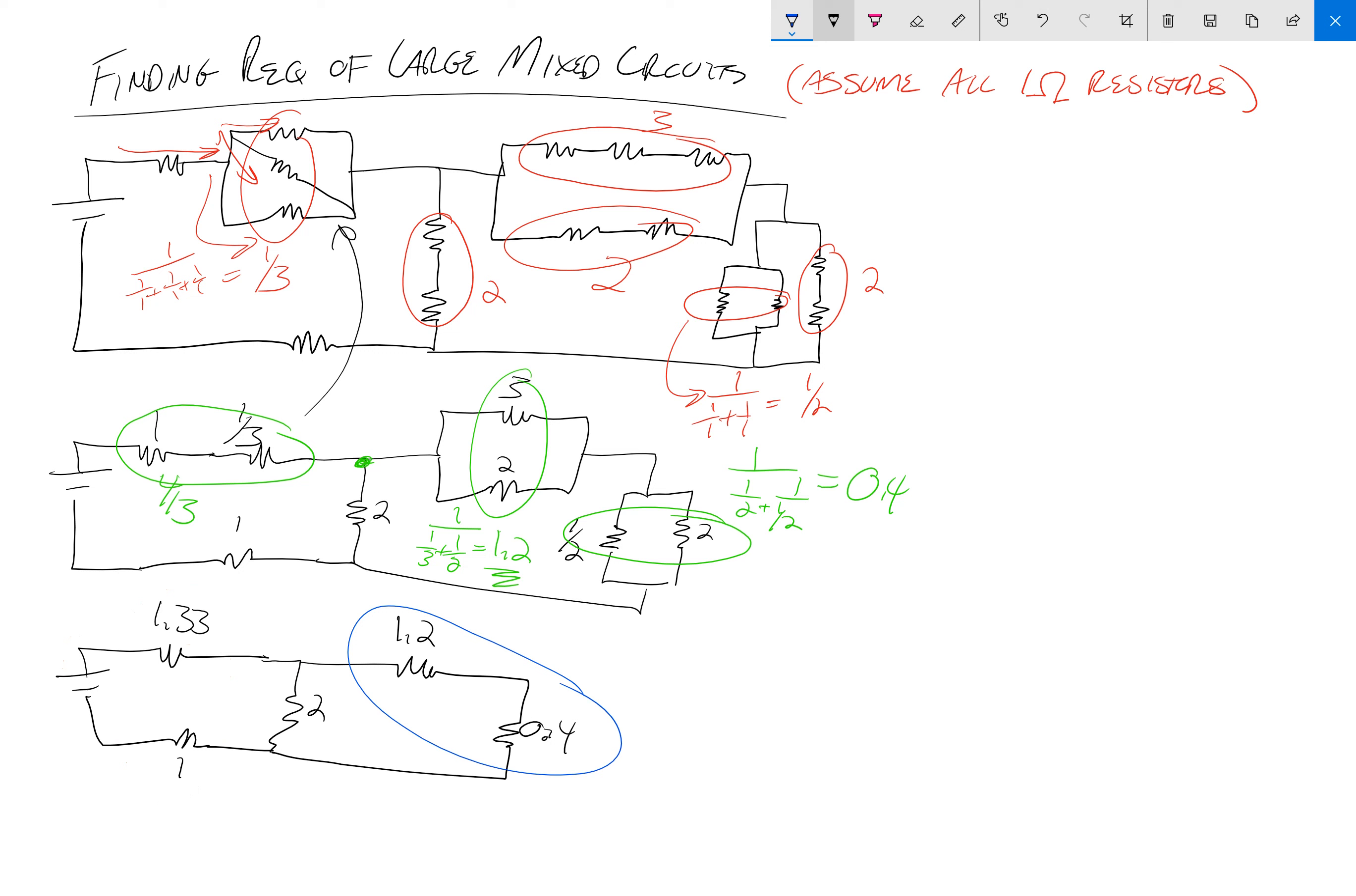Those two are in series, which becomes 1.6 because we just add them. Now we have to redraw again, so I'm going to bring this over here because we're running out of space on my small computer screen. So redrawing, we have 1.33, we have a 2, we have a 1, and then we have a 1.6.